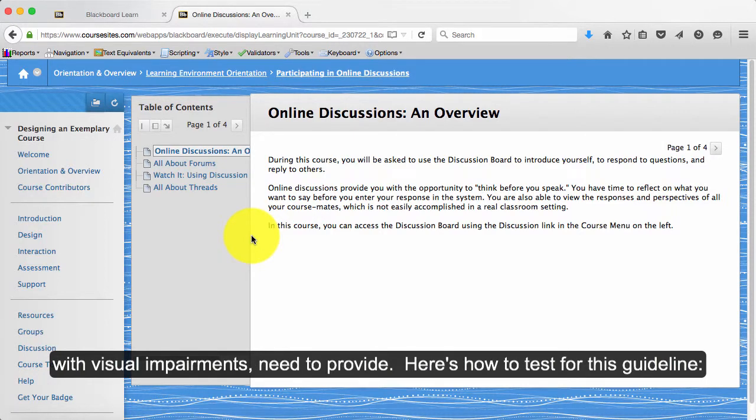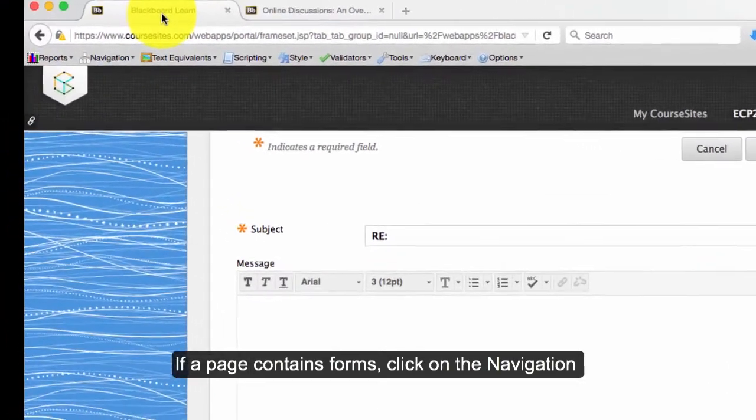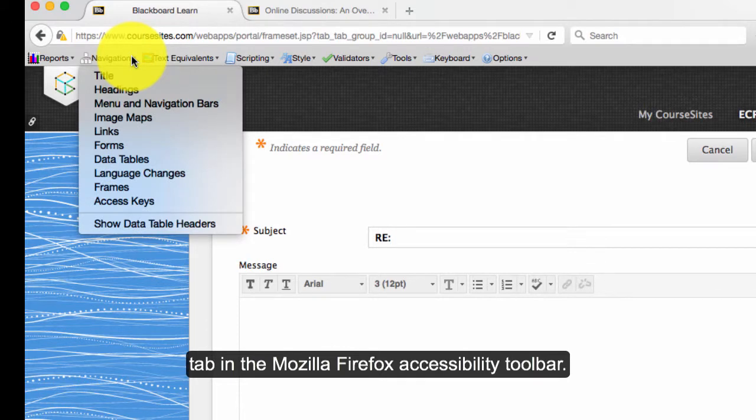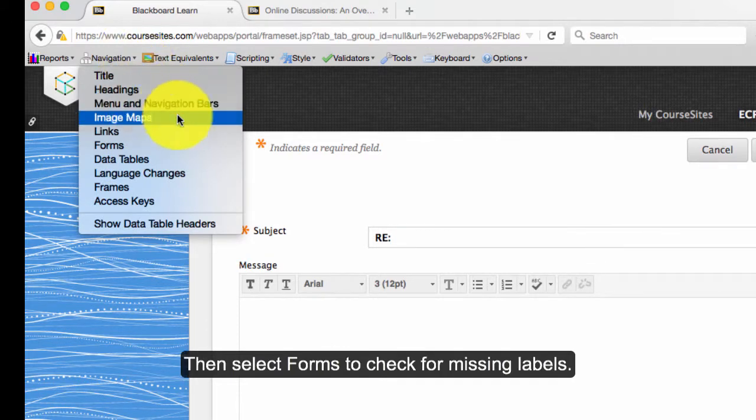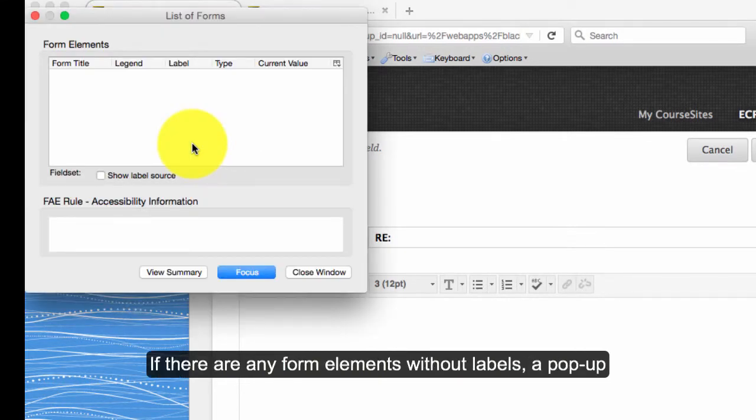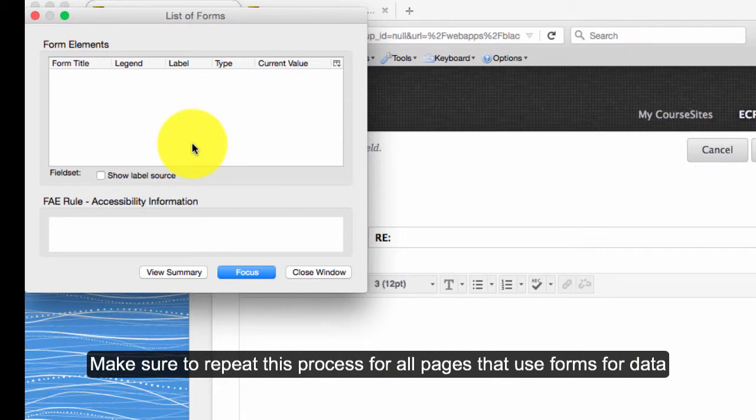Here's how to test for this guideline. If a page contains forms, click on the Navigation tab in the Mozilla Firefox Accessibility Toolbar. Then select Forms to check for missing labels. If there are any form elements without labels, a pop-up window will display an error message with a form title and ID. Make sure to repeat this process for all pages that use forms for data input.